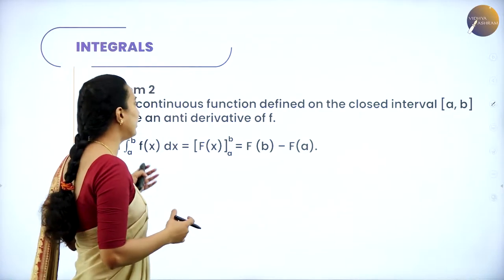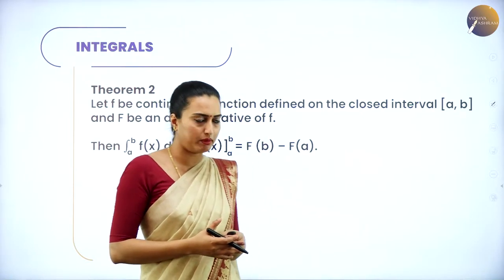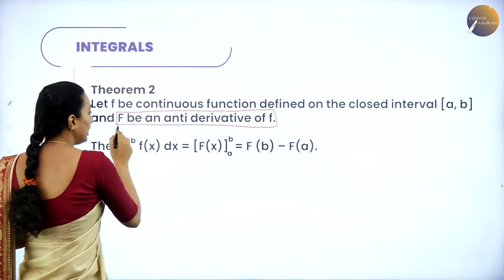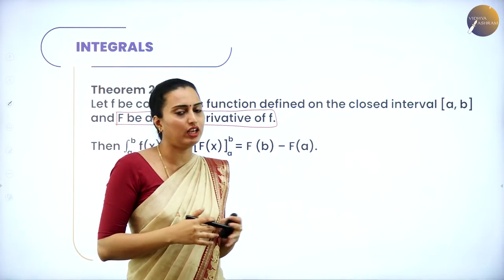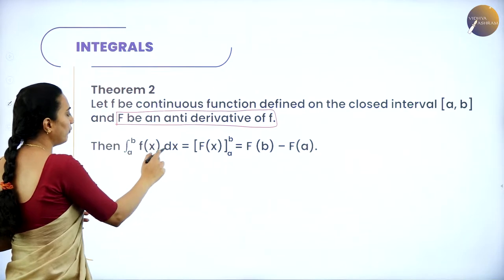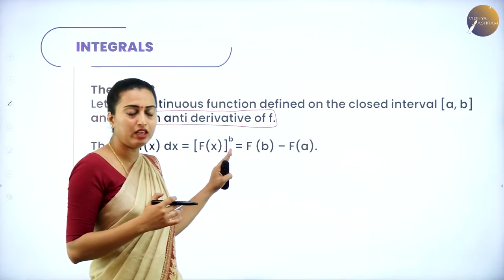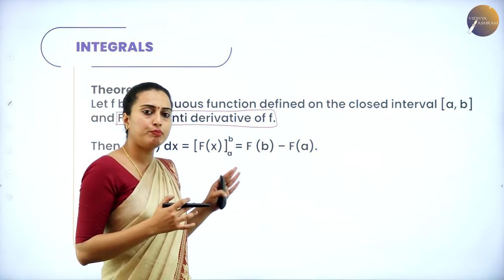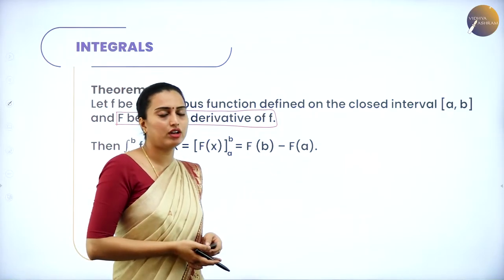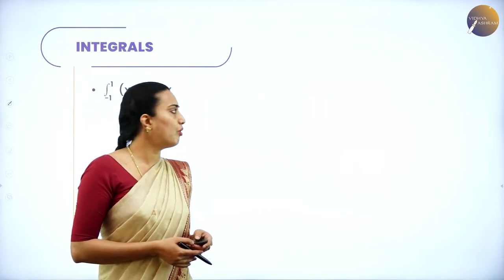Next, the second fundamental theorem of calculus states: let f be a continuous function defined on the closed interval [a, b] and let F be an anti-derivative of f(x). Then the integral from a to b of f(x)dx equals F(b) minus F(a), where a is the lower limit and b is the upper limit. Based on this theorem, let us move on to solving the problems.